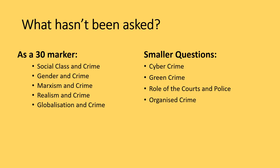Marxism and crime is a tough area for students, covering not just classical Marxism but neo-Marxism. One theory students often find confusing is the fully social theory, which requires taking into account six different components before assessing whether someone's behaviour is criminal. Realism and crime has appeared in shorter questions but not as a dedicated 30-marker — 'Evaluate the contribution of realist theories to our understanding of crime and deviance' could be one that comes up.